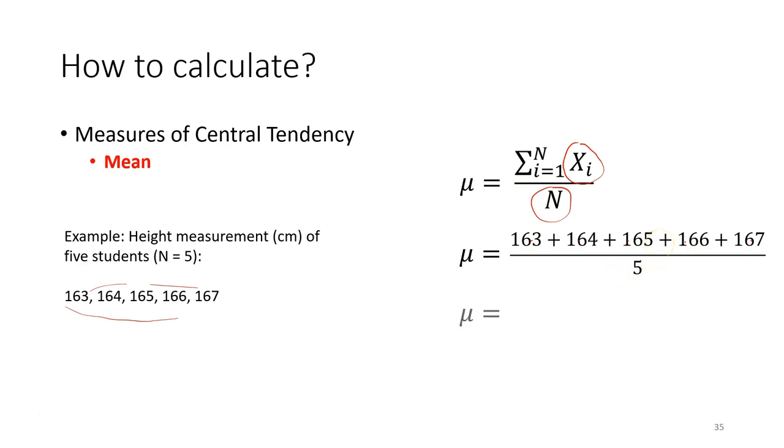This is how we calculate the mean. Remember, whenever you report a mean it's very important to mention the unit because there's a unit of measurement for each observation. So the mean of this dataset of five students is 165 cm.